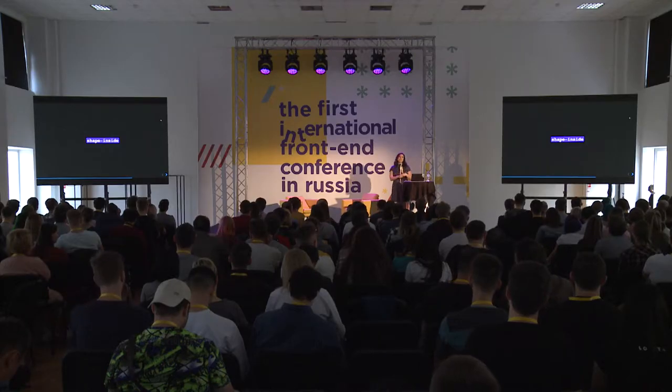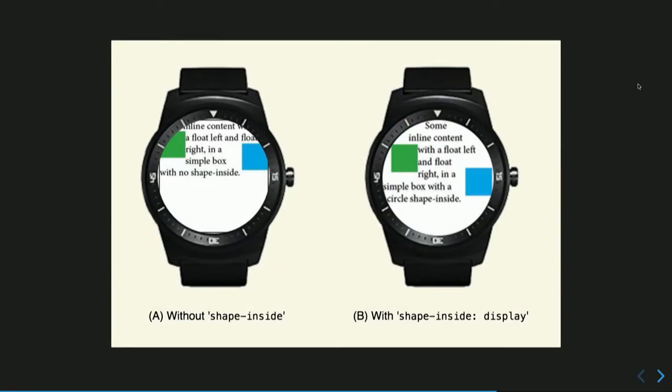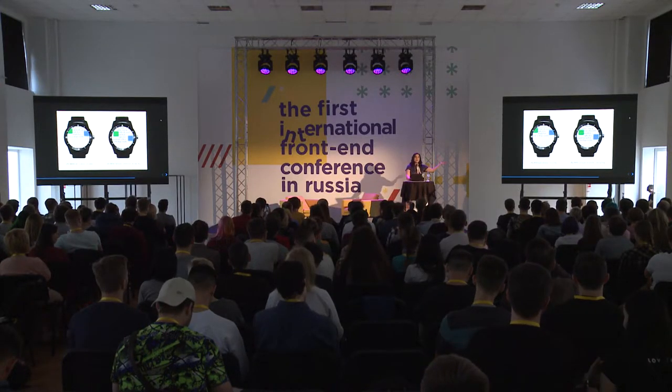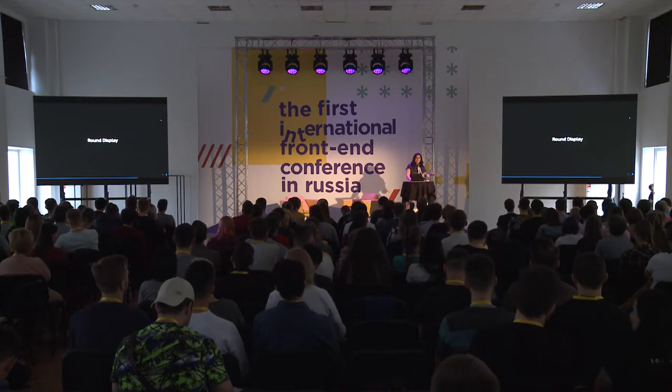Shape inside is interesting — currently we have shape-outside, which lets you place shapes in a UI and text flows around it. Shape inside is a harder problem: what do you do with content when it flows out of the shape? So we haven't had it yet, but developers and the W3C are still looking into what it could look like. If you have a circle with shape inside and a shape-inside display, you can visually contain things within a single display. This is really great for round displays — CSS is spreading past browser screens to phones, watches, refrigerators, and cars.